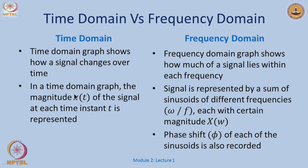In the time domain, the magnitude of the graph at each instant is represented. When you draw a graph, I will show you examples of this briefly. Similarly, in the frequency domain, the signal is represented as a sum of sinusoids of different frequencies with certain magnitude and in some cases a certain phase shift.